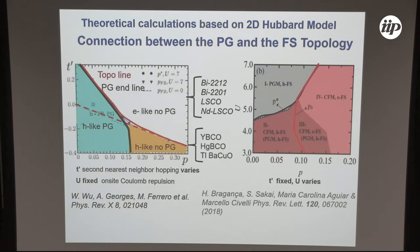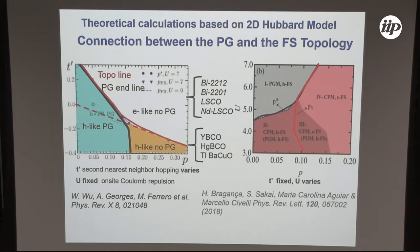Following our experimental results, theoretical calculations based on 2D Hubbard models have been investigated, showing a connection between the pseudogap and Fermi surface topology. In a simple description, there are two regimes: one where the topological transition — the change of Fermi surface — merges with the pseudogap collapse, as in Bismuth-2212, Bismuth-2201, LSCO, and Neodymium-LSCO; and another regime where the pseudogap collapses before the Fermi surface topology change, as in YBCO, mercury compounds, and thallium-barium copper oxide. These two phase diagrams have been calculated by the Antoine Georges group and by Maria Carolina Nica and Marcello Civelli.